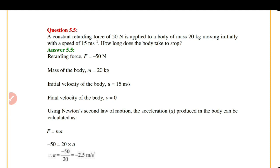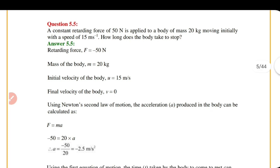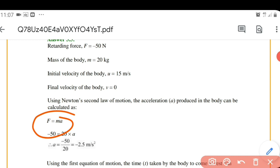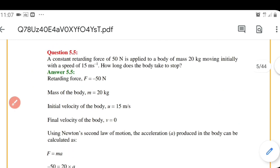Now, Question 5.5: a constant retarding force of 50 Newton is applied to a body of mass 20 kilogram moving initially with a speed of 15 m/s. How long does the body take to stop? The retarding force acts opposite to the direction of motion, so we take it as negative. Using Newton's second law, F equals m times a, we get acceleration equal to minus 2.5 m/s².